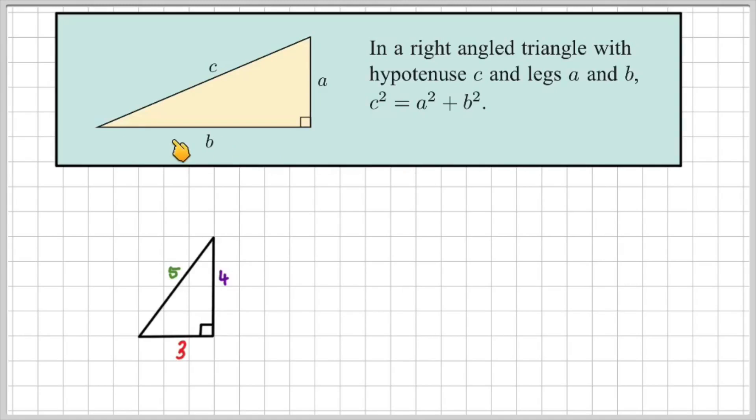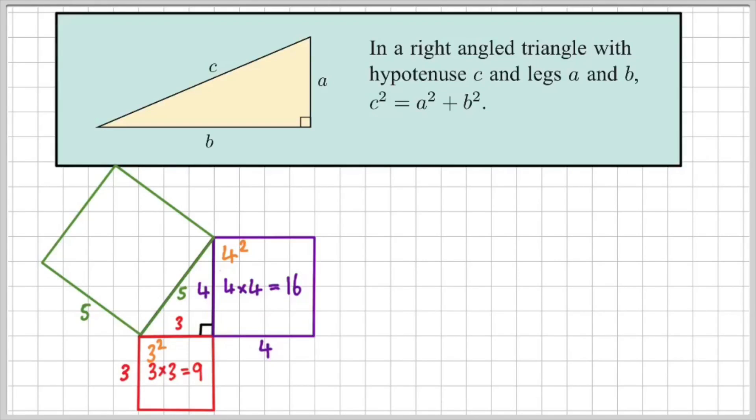And if we label these A, B and C, you can notice that my hypotenuse is the longest side of the triangle. So if this is A and this is B, so the square of A, 3 times 3, which equals 9, and the square of B, 4 by 4, which is equal to 16.